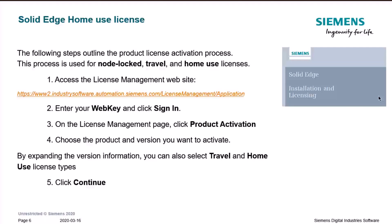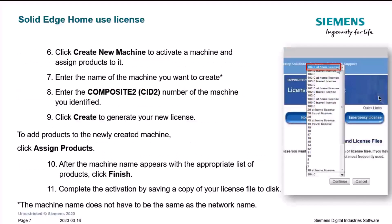On the license management page, click Product Activation. Choose the product and version you want to activate, since you might have different options. By expanding the version information, you can select which type of license you want — in this case, select Home Use license type. Then click Continue, and the system gives you the option to create a new machine, activate that machine, and assign the product you chose to it.